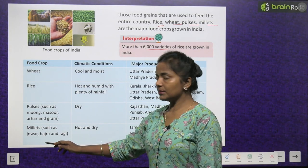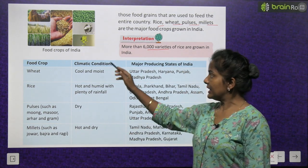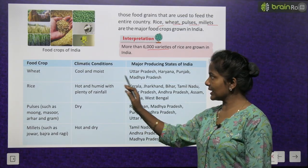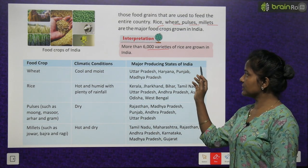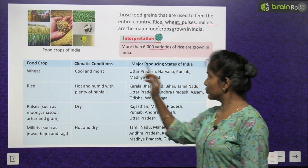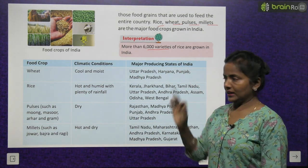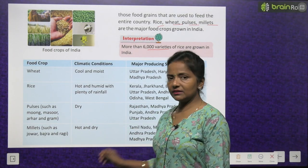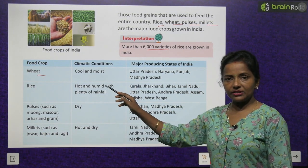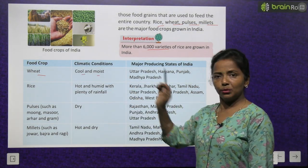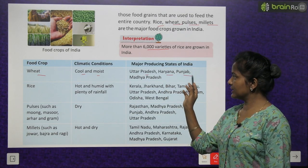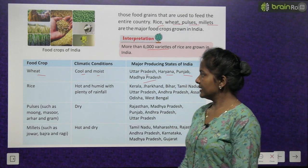Now let's read about food crops from the chart. For wheat, the climatic condition required is cool and moist. Major producing states are Uttar Pradesh, Haryana, Punjab and Madhya Pradesh. For rice, hot and humid climate with plenty of rainfall is needed.